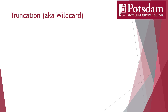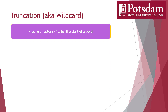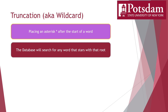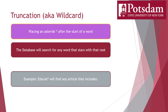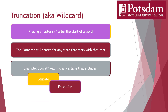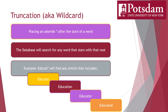Lastly, we have truncation, which is sometimes referred to as a wildcard search. Truncation will only work in databases, not in Google or other search engines, and it won't always be relevant to every search you do. But when it is, it's very, very useful. Truncation involves taking the start of a word and placing an asterisk immediately after it. The database will then conduct a search for every word that starts with that root. A great example is the term educat* — if you conduct a search like this, you'll get results for everything that starts that way: educate, education, educator, educated, and so on. This can save you a lot of time because it's conducting four or more searches at once, rather than you having to do each of these searches individually.